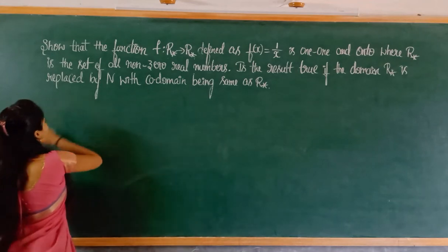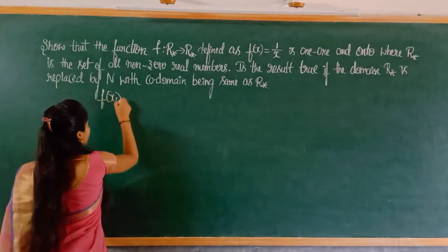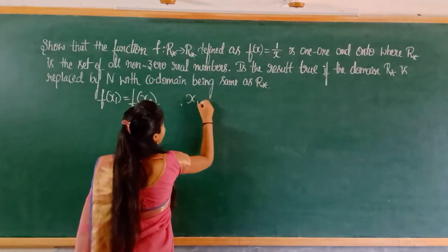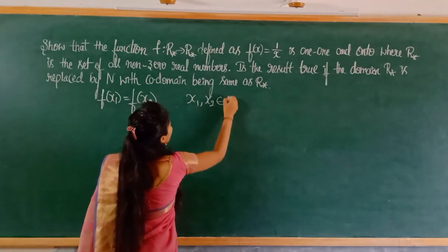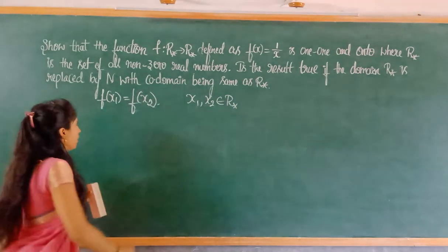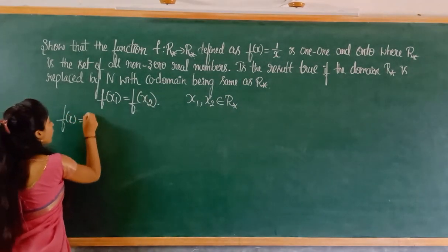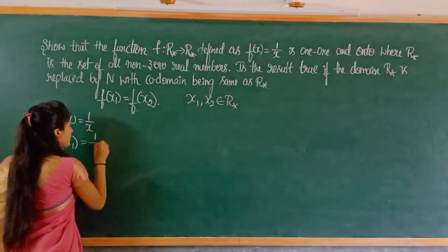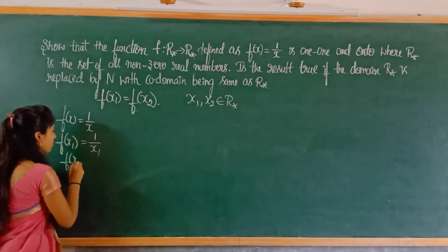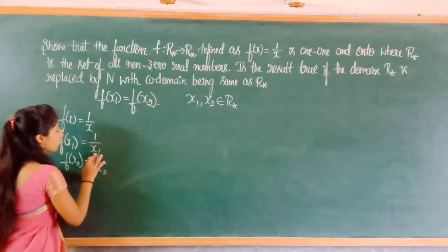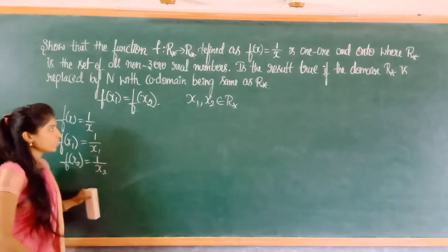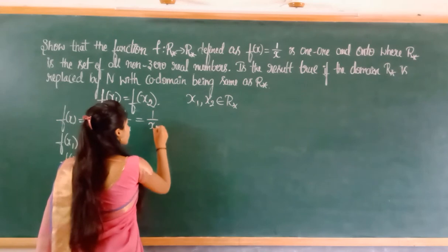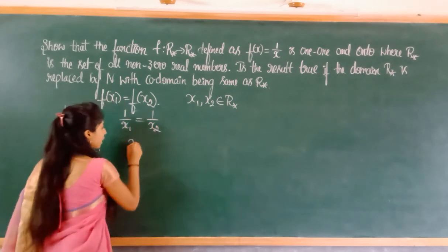For f is one-to-one, the condition is f(x1) = f(x2), where x1, x2 belong to R*. Since f(x) = 1/x, we get f(x1) = 1/x1 and f(x2) = 1/x2. Substituting: 1/x1 = 1/x2, which gives x1 = x2. Therefore f is one-to-one.